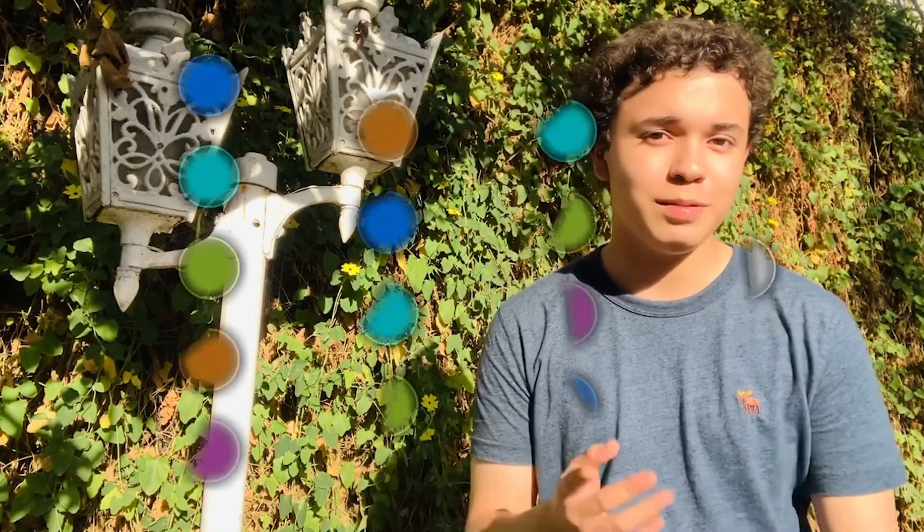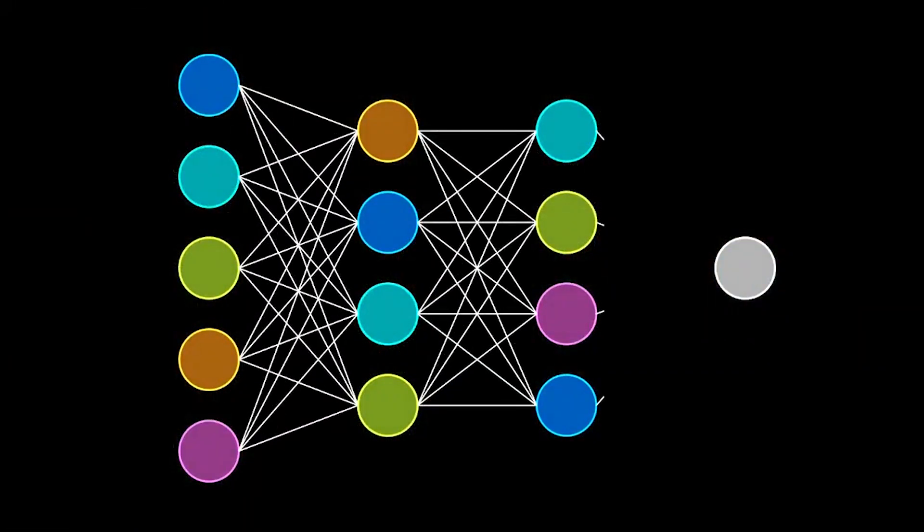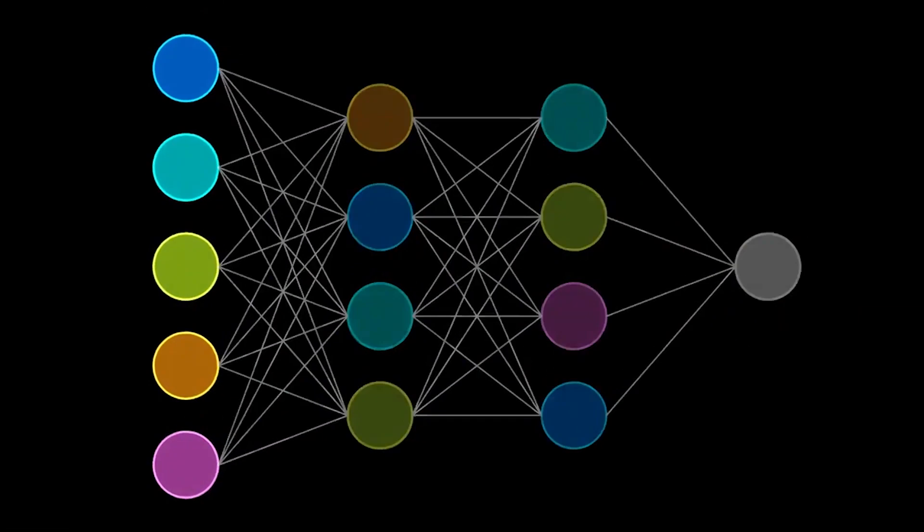How could you ever get a computer to recognize an image the way a human does? That sounds insane. Turns out we can do it with neural networks, which are typically represented like this. Each dot in the network is called a neuron.